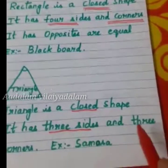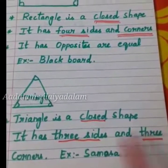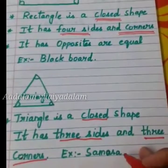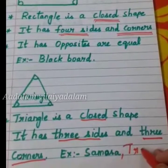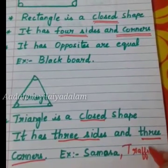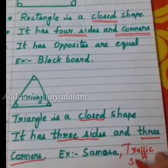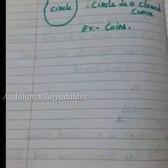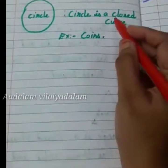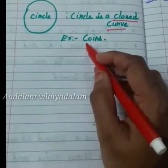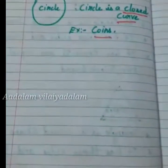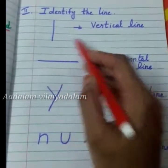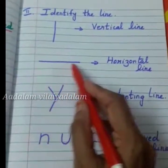Triangle is a closed shape. It has three sides and three corners. An example is a samosa. A circle is also called a closed curve. An example of a circle is a coin. Now let's identify the lines. This is a vertical line. This is a horizontal line.